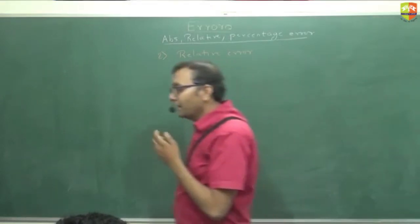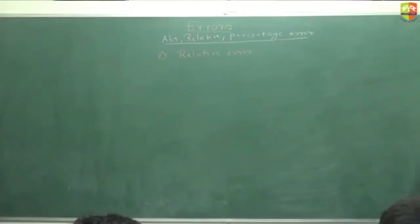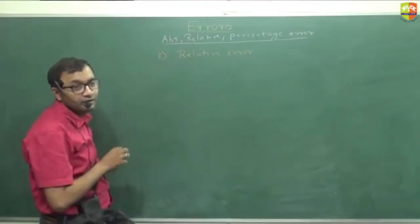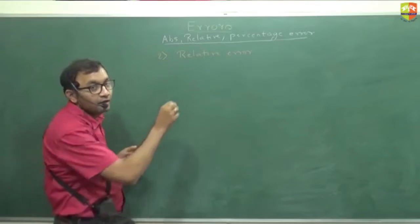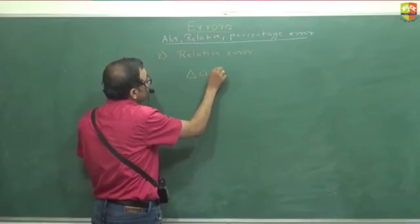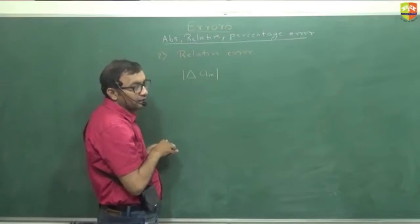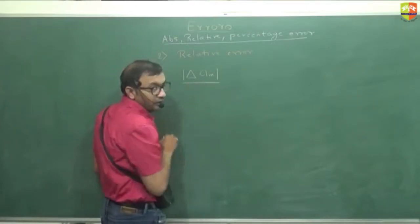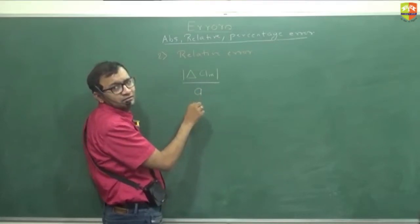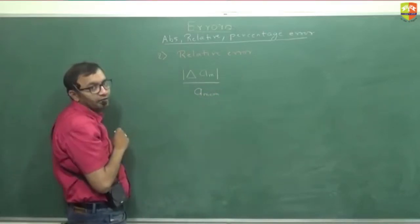The way relative error is defined: the absolute error is this. Relative error should be the ratio of this divided by the mean. Just the mean. This is your relative error. If you are measuring one lakh kilometers and the error is one kilometer, then one divided by one lakh is the relative error.